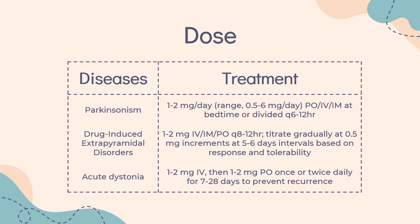For idiopathic Parkinsonism, start with 0.5-1 mg QHS initially. Titrate dose in 0.5 mg increments every 5-6 days, range 0.5-6 mg daily. Some patients may need 4-6 mg/day, not to exceed 6 mg per day.